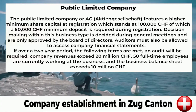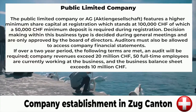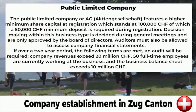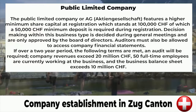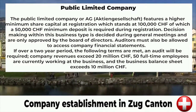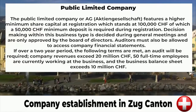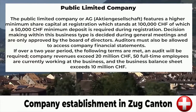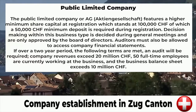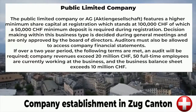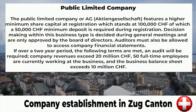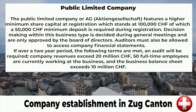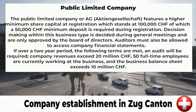Decision making within this business type is decided during general meetings and is only approved by the board of directors. Auditors must also be allowed to access company financial statements. If over a two-year period the following terms are met, an audit will be required.